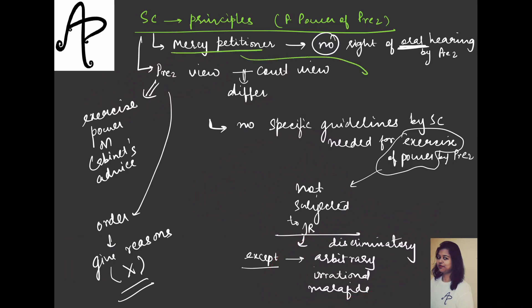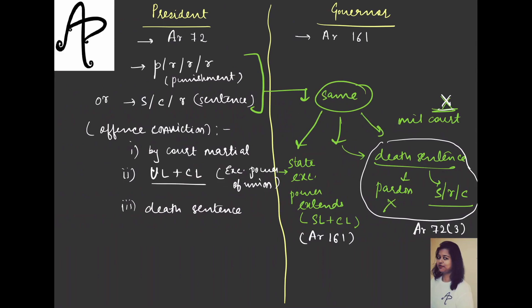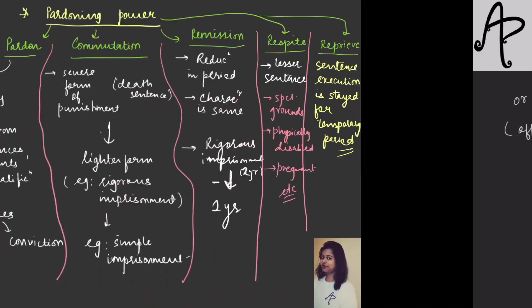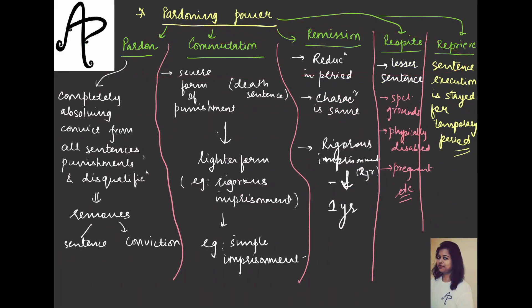Also, if someone's mercy petition is earlier rejected — once rejected — there is no stay on second filing. If the person tries to file that petition again asking for mercy, they will get no relief. Once the decision is made — rejected or accepted — that is final. These are the Supreme Court guidelines with respect to this power. Here we have the constitutional provisions for President and Governor, and here we have the description of the terms related to this topic. I hope that's clear to you. Hope you enjoyed the session, thank you so much, meet you in the next one, take care, bye bye.